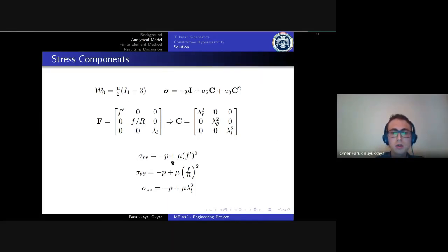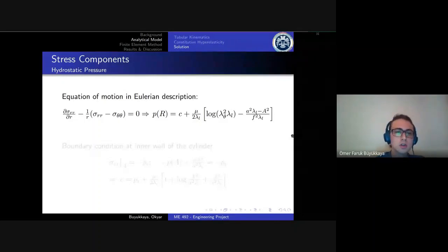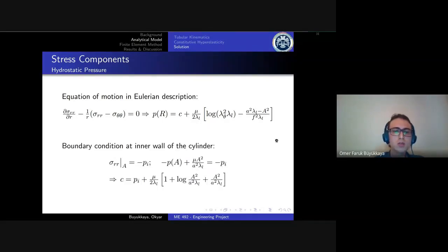We don't know here p, the hydrostatic pressure. In order to solve it we apply the equation of motion in Eulerian description, current description. If we solve this differential equation we get p with an integration constant c. To find out c, we apply the boundary condition at the inner wall of the cylinder, which is the Cauchy stress in the radial direction is equal to the applied inner pressure. Here we get c.